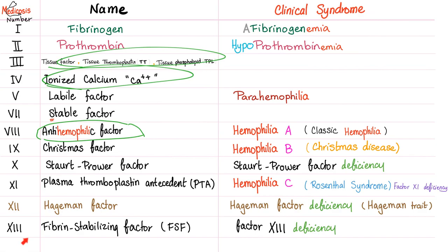For PhD-level detail: factor 13 has many subunits. The A subunit does not come from the liver — it comes from the bone marrow.